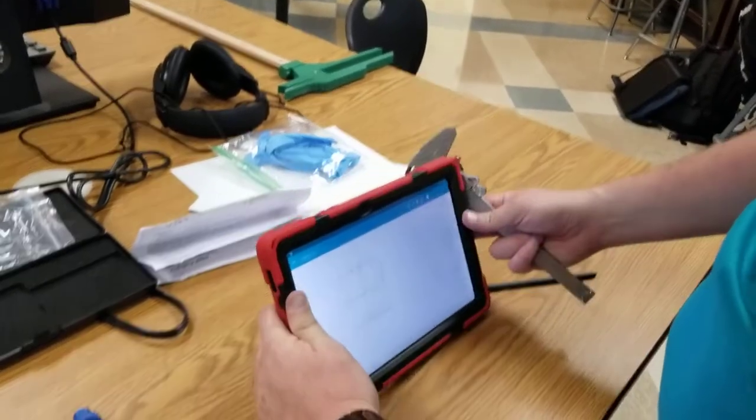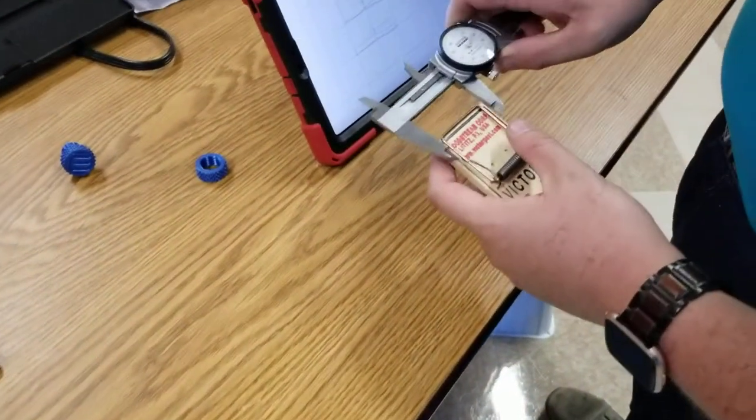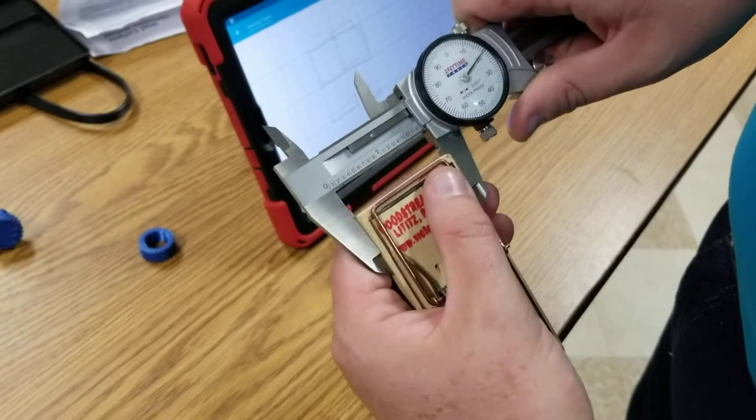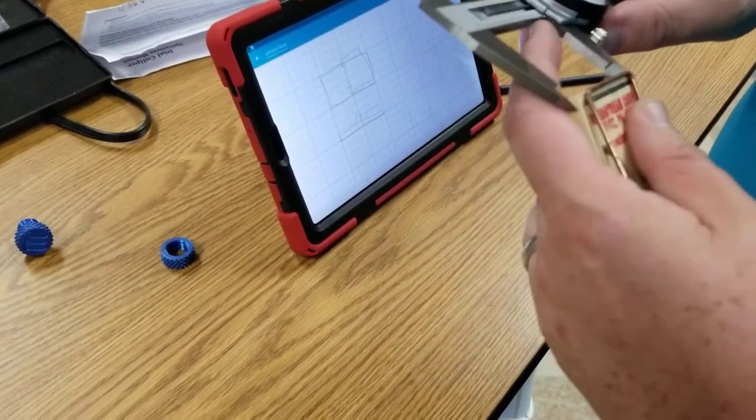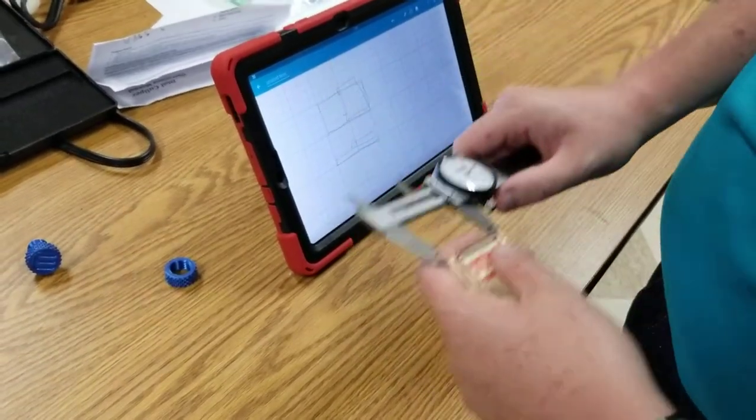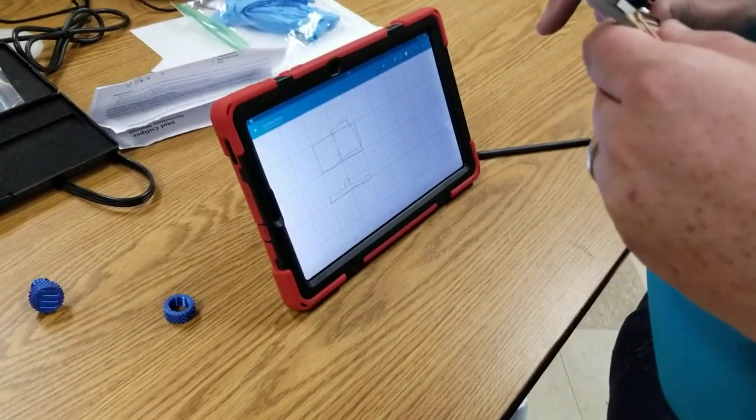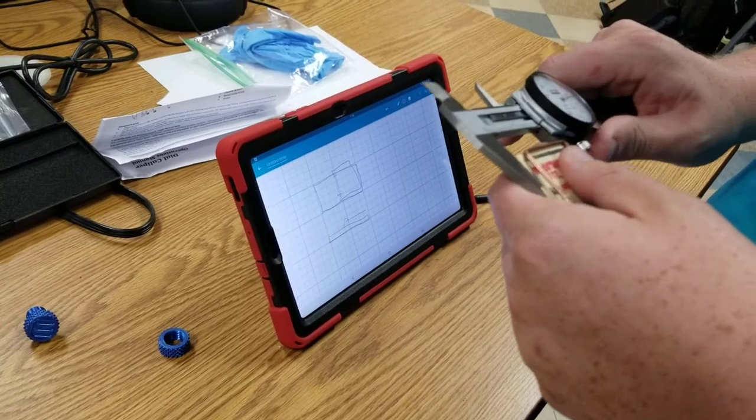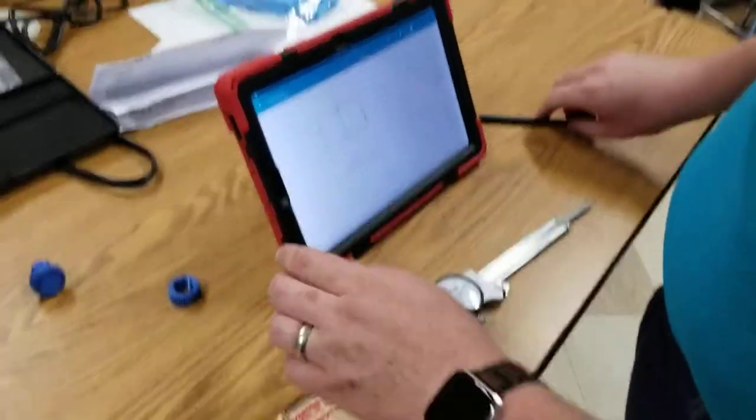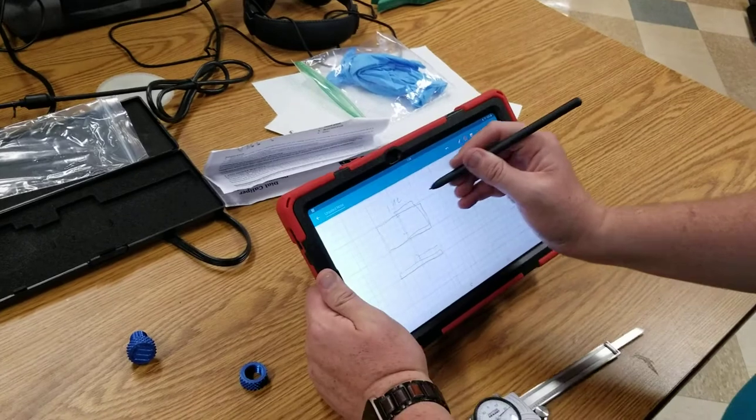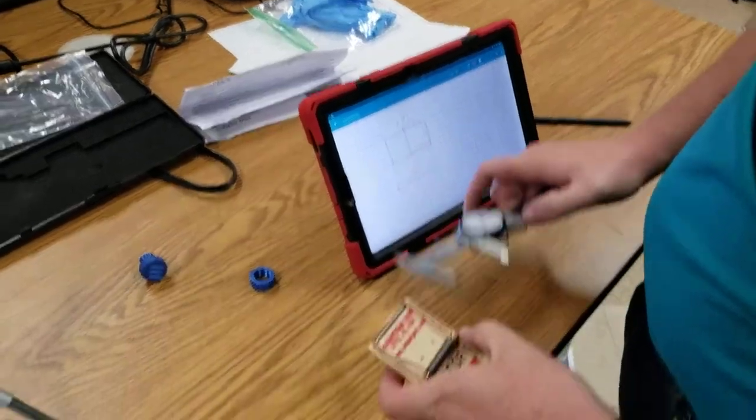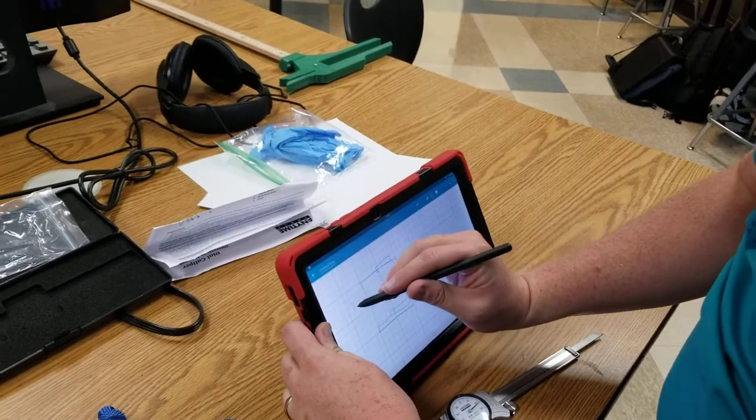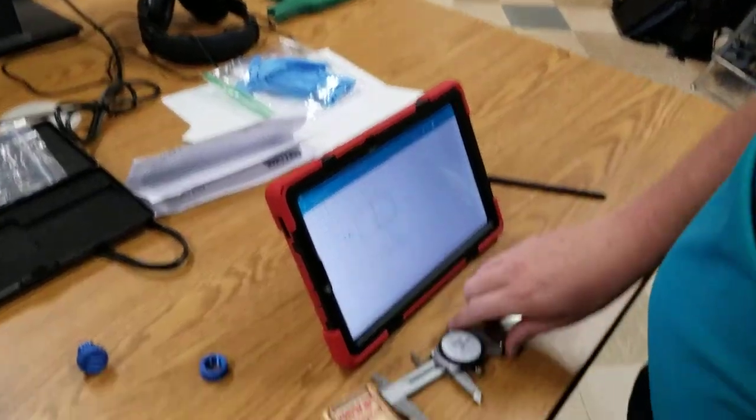The first measurement I'm going to take is the overall width of my mousetrap, which is 1.82, actually 1.92. Then for the overall length...